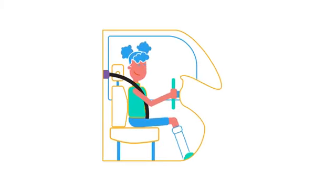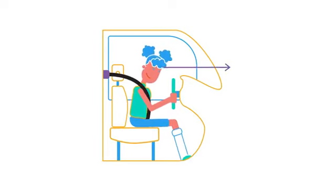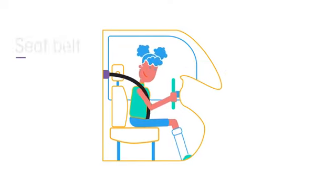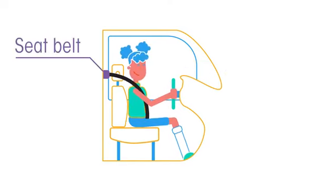Inertia is why you feel a jerk as the brakes are applied in a car or a bus. Your body tries to continue moving forward but your seat belt, which is attached to the slowing car, applies the force that also slows you down. Inertia is the resistance to the change in velocity.